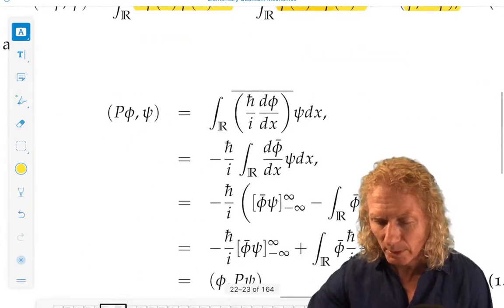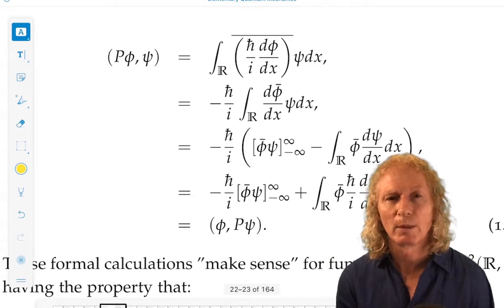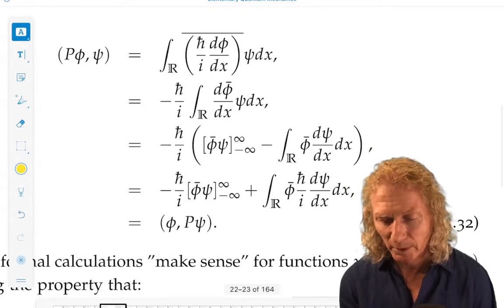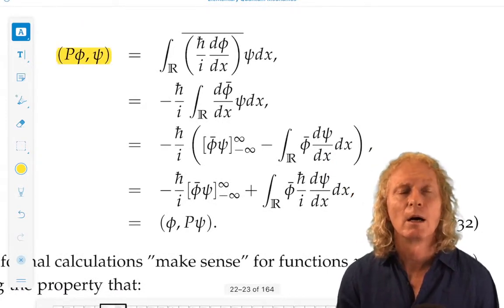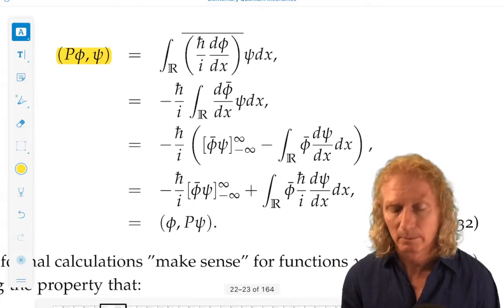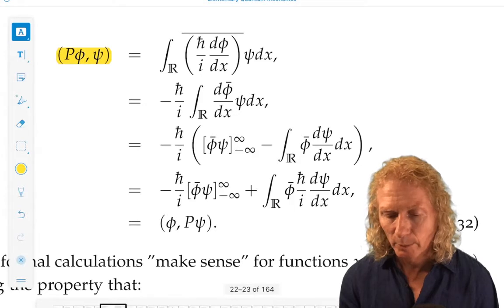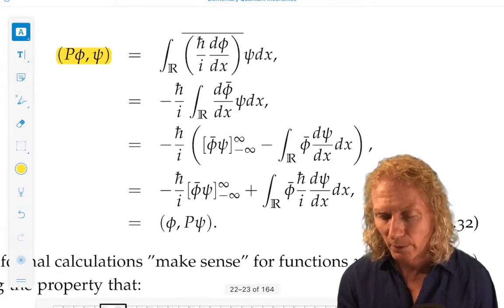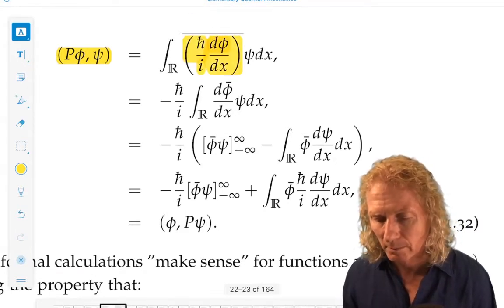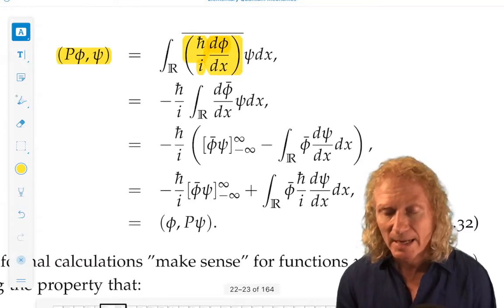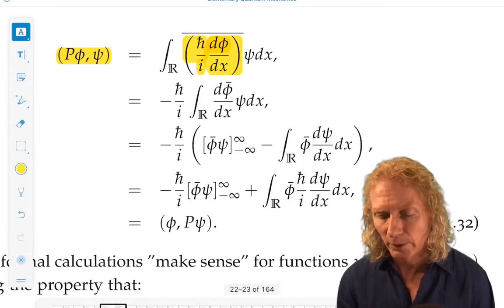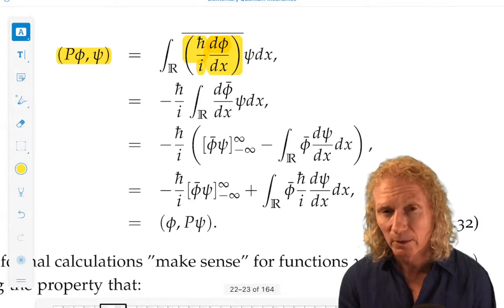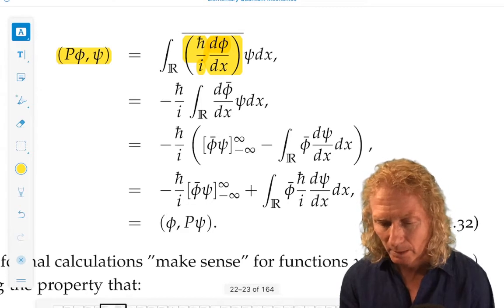Now, the momentum operator is a bit more complicated. We have to do a bit of integration by parts, which we do a lot of in quantum mechanics. Let's start off in the same way. The inner product of operator p acting on phi with psi. What is that? The operator p is just h bar over i. I haven't said what h bar is yet, but it's a constant. That's all you need to worry about. D phi dx with a complex conjugate over the top multiplying psi of x. Now, we do the integration by parts. Because, remember, integration by parts enables us to switch the d by dx off from acting on the phi to the psi. That's a good way to think of integration by parts.